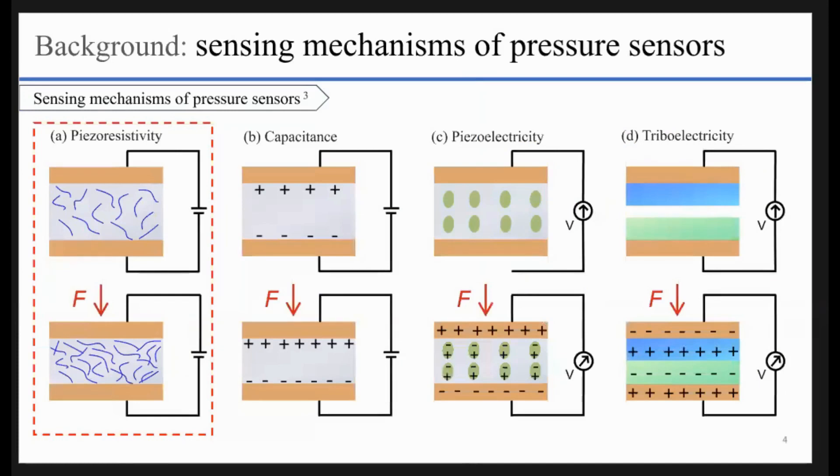Basically, there are four most popular sensing mechanisms of flexible pressure sensors: piezoresistive, capacitance, piezoelectricity, and triboelectricity. Piezoresistive pressure sensors have a simple device structure, easy signal readout, high accuracy, and low cost, making them a popular candidate for various applications.